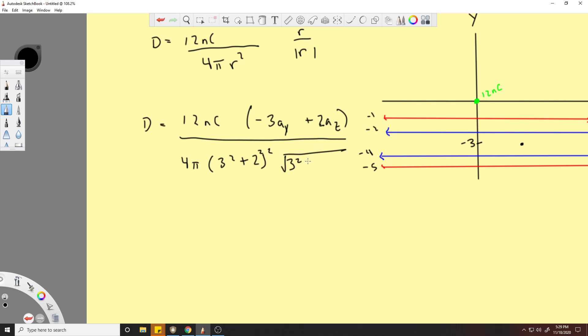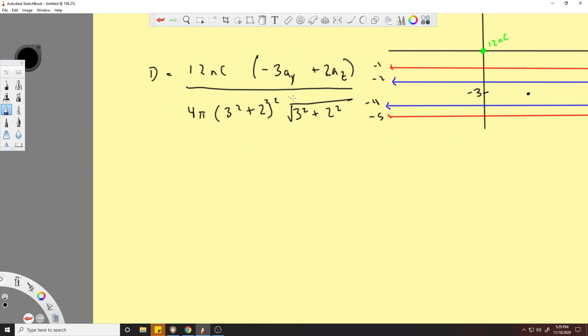This is going to be the root of 3 squared plus 2 squared. You can take this value and just take it to the three halves, or just do the math. This is all just a math problem now, and you will result in negative 6.11 a_y plus 4.07 a_z. This is your final answer.